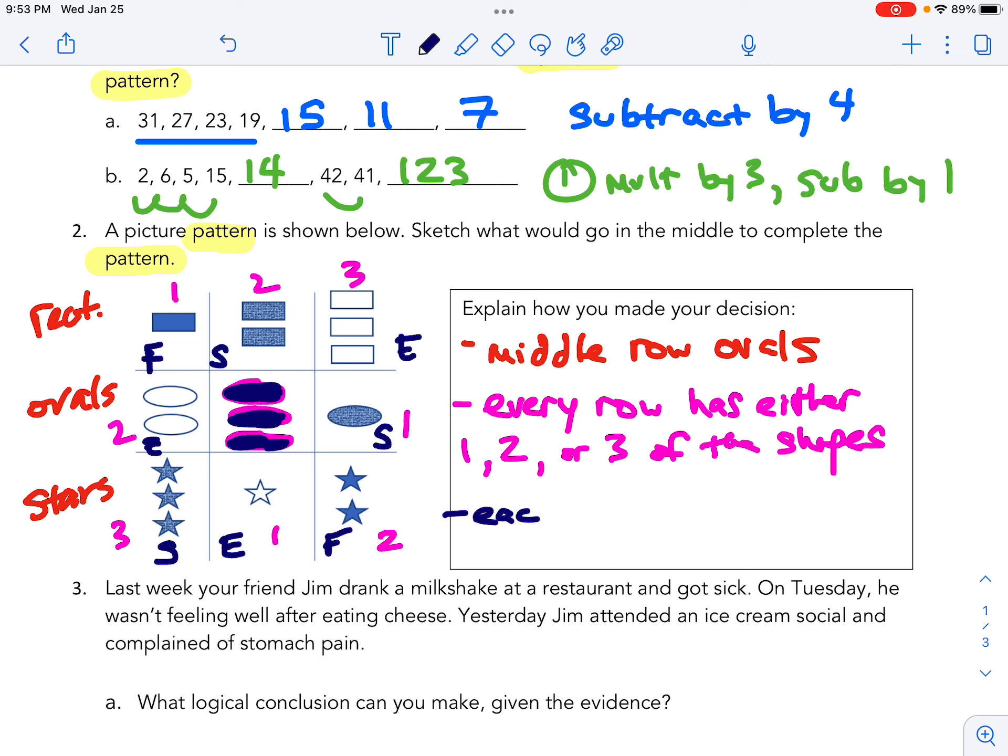Each row has either empty, semi, or fully shaded shapes.